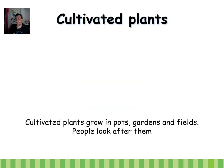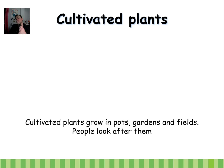Let's talk about cultivated plants. We have two types of plants according to their way of growing — they might be cultivated plants or wild plants. Cultivated plants grow in pots, gardens, and fields, and people look after them. Let's see some examples.